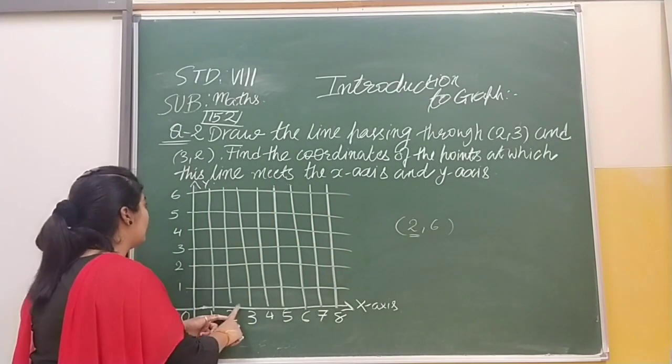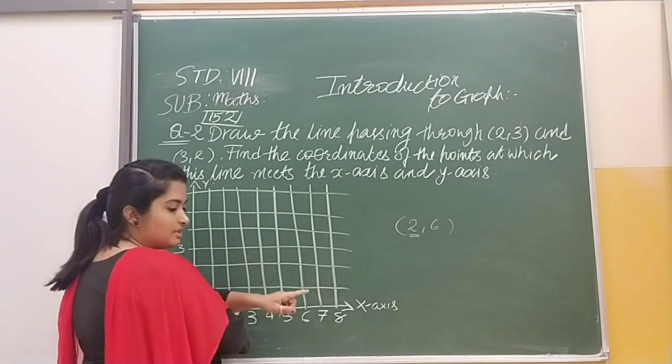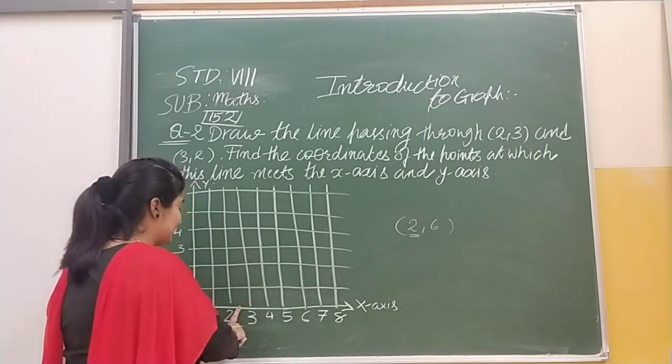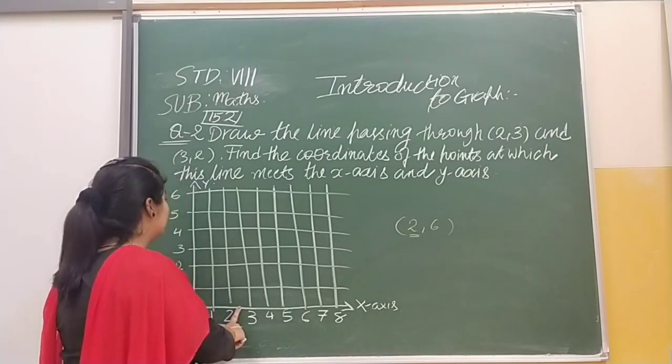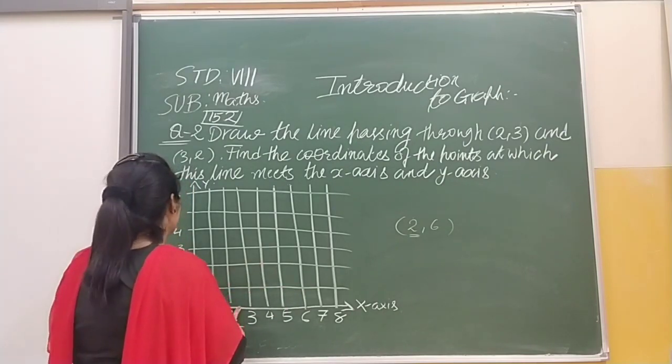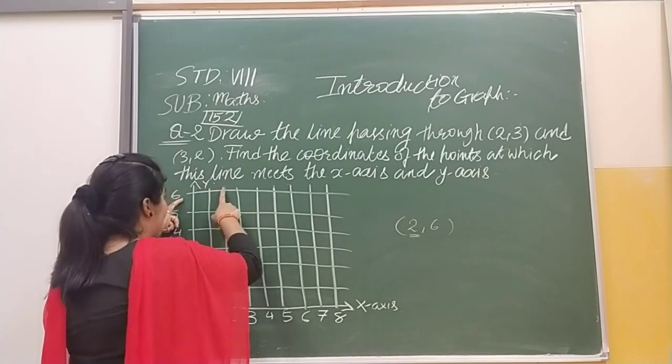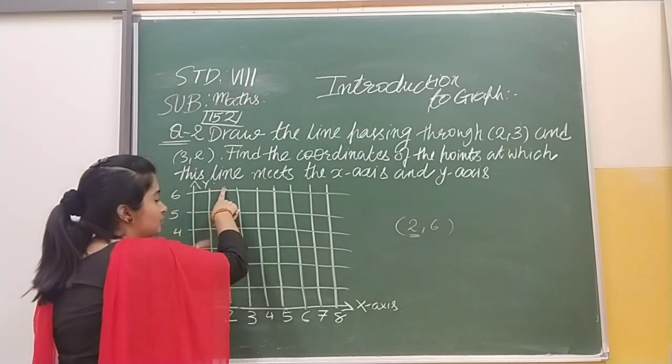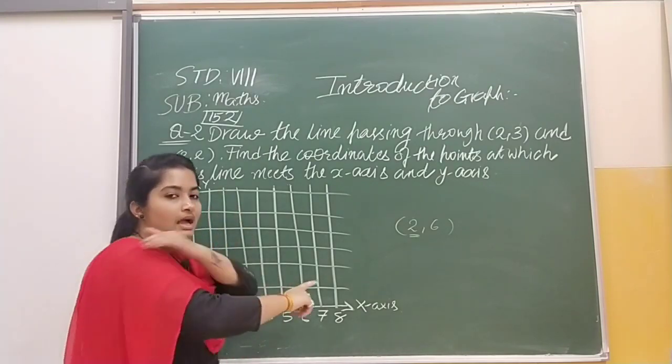First we will see 2, and since we have 2 first, we will look at 2 on the x-axis and then 6 on y-axis. So our point will be found here - the (2,6) point.